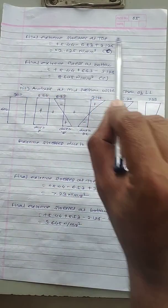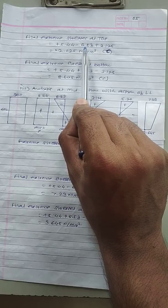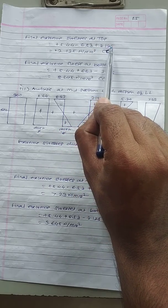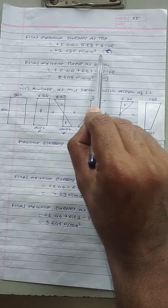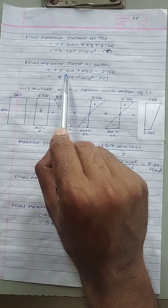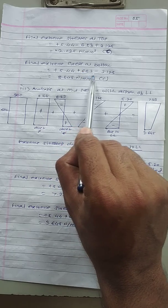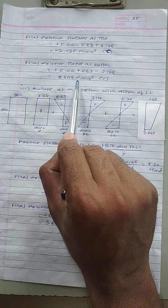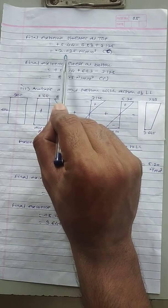Final extreme stress at the top (midsection, no live load) = 5.44 − 6.53 + 3.125 = +2.035 N/mm² (positive, compression). Final extreme stress at the bottom = 5.44 + 6.53 − 3.125 = 8.845 N/mm² (positive, compression). This is the final stress at the top and bottom for this condition.